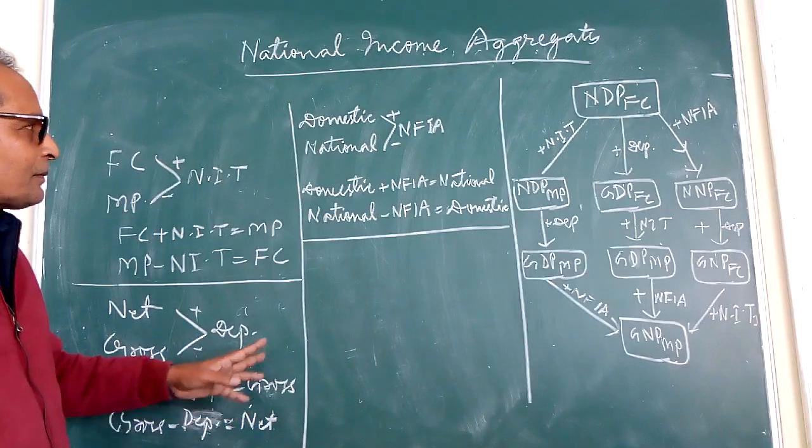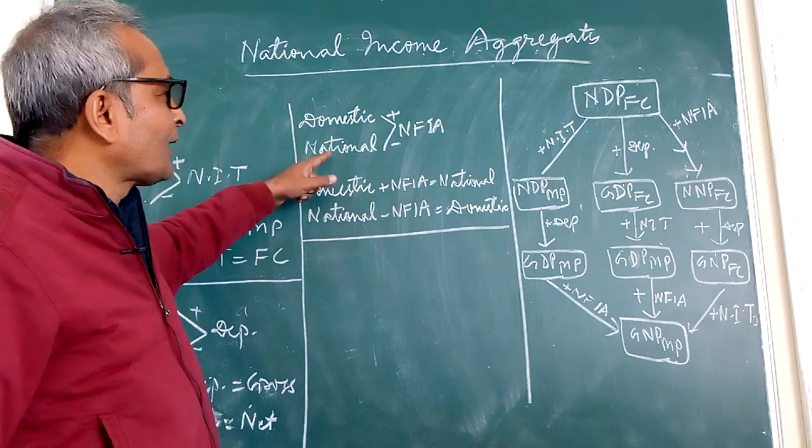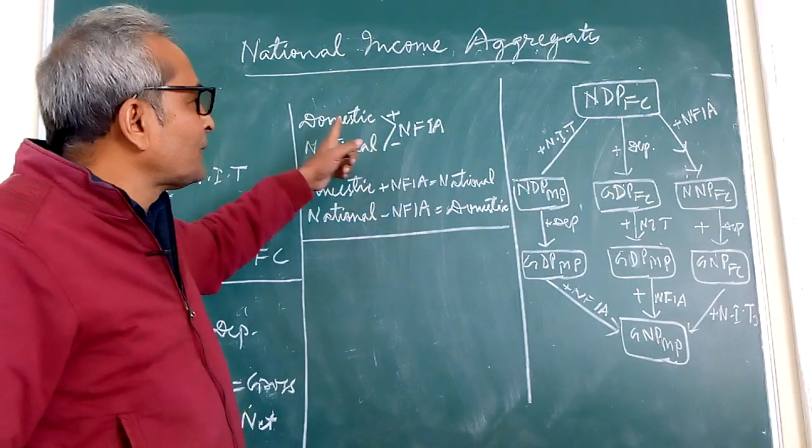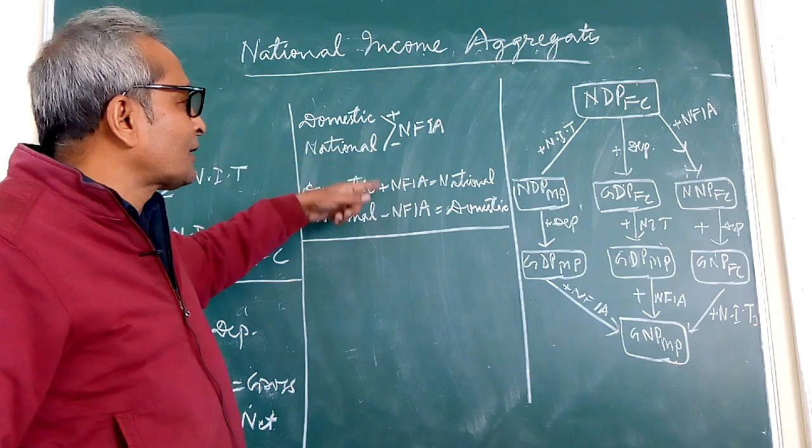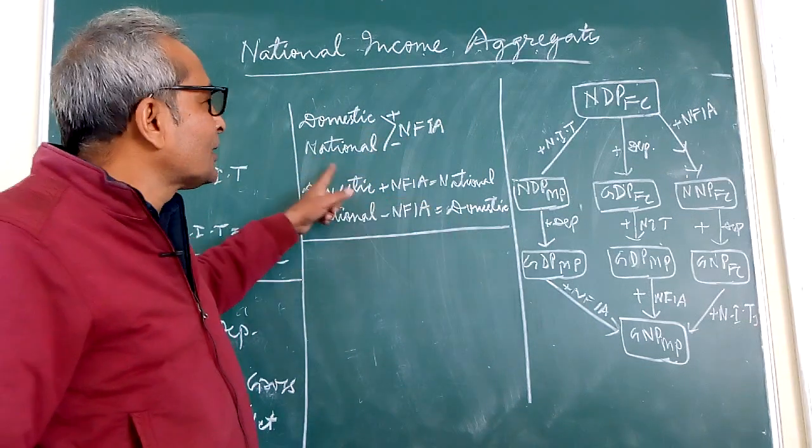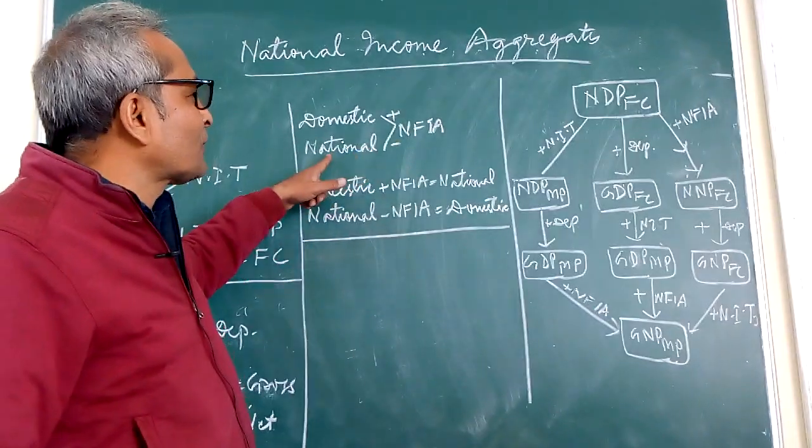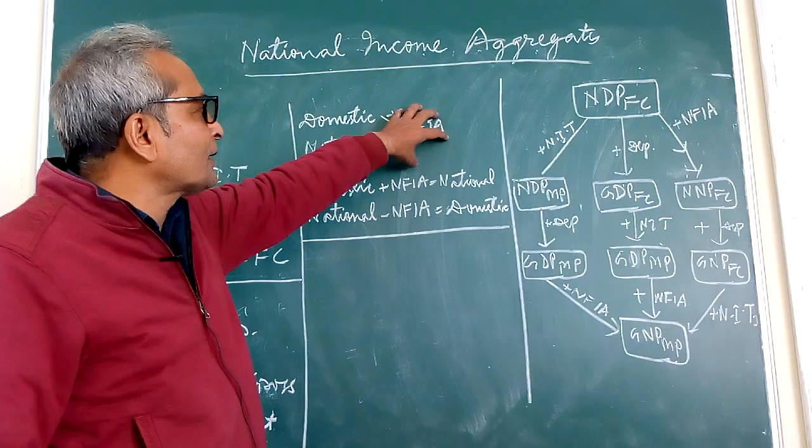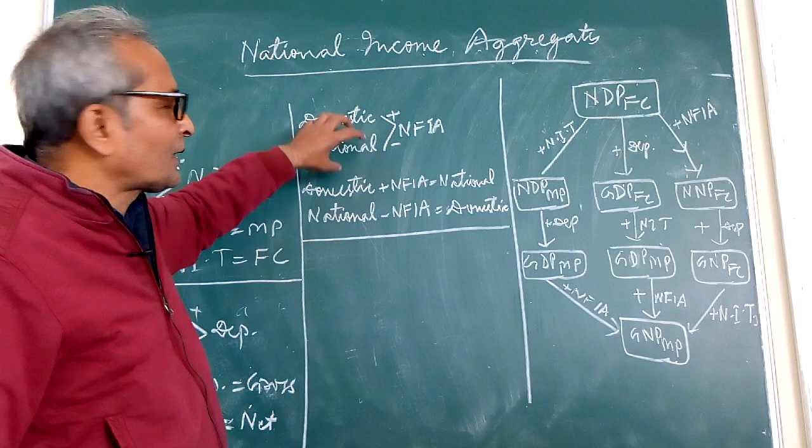Similarly we have domestic and national income. The differentiator is NFIA. If we add NFIA in domestic we get national income. If we subtract NFIA from national we get domestic. So this NFIA is the differentiator of domestic and national.